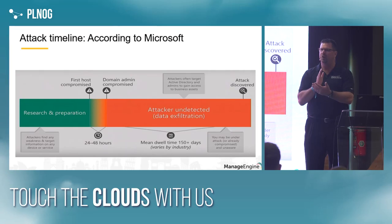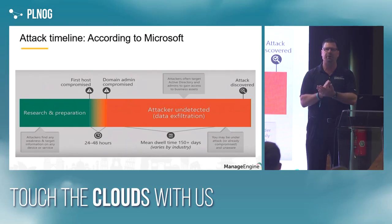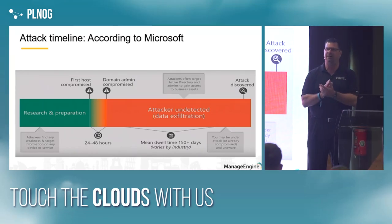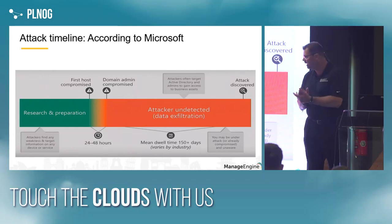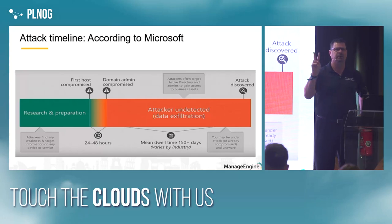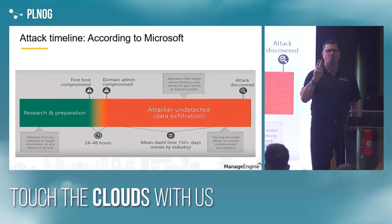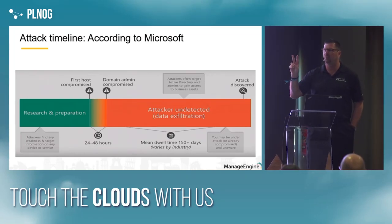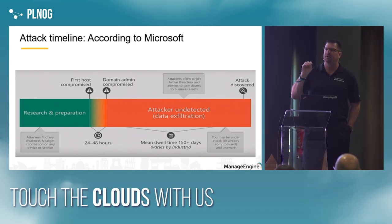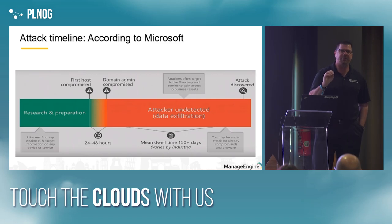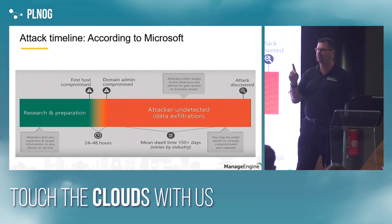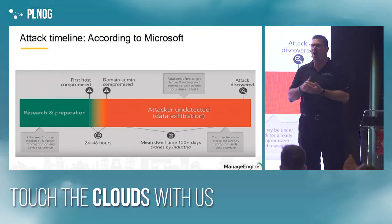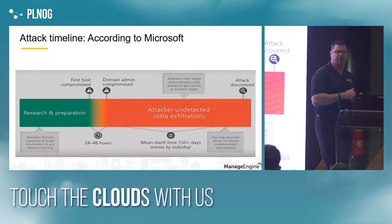When they attack, the goal is to compromise at least one computer. According to Microsoft, once a single computer in your Active Directory domain has been compromised, it only takes two days to get domain admin credentials. Think about that: one computer, two days to domain admin credentials. So we must protect from attacks. If we think about which computer is usually compromised first, of course it's an endpoint. We have to secure our endpoints and we have to start monitoring them — this is crucial for securing our environments.